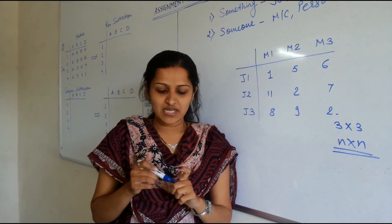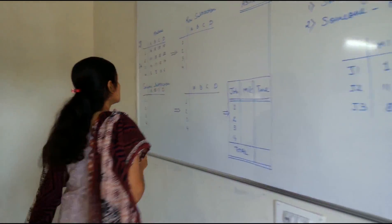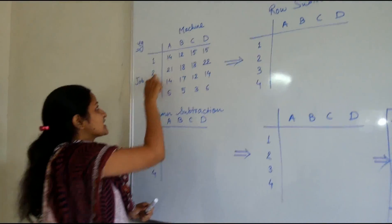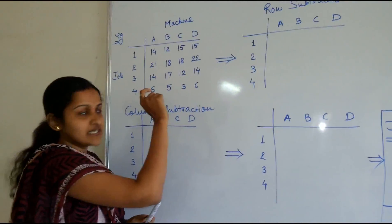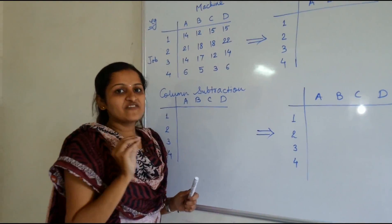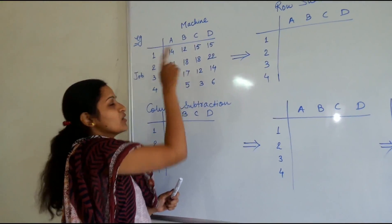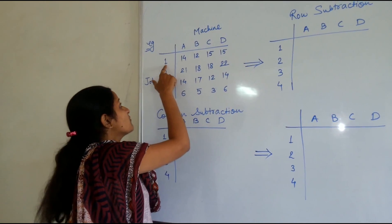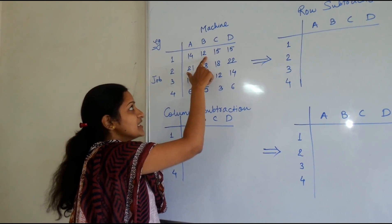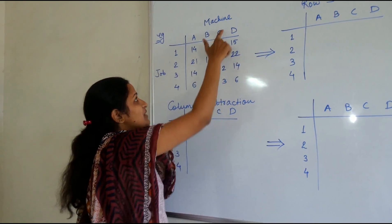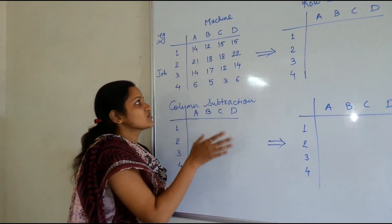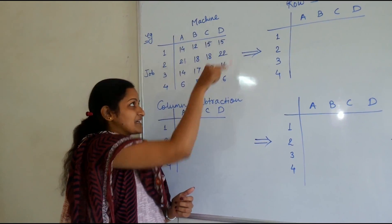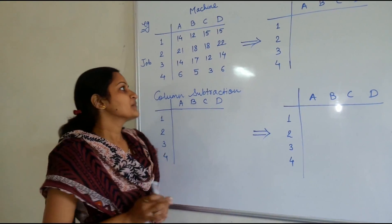Now let us see one simple example of how to solve assignment problems. In this example 4 jobs are given and 4 machines are given: A, B, C, D. These figures are time figures expressed in minutes. This means job 1 can be performed by machine A in 14 minutes, job 1 by machine B in 12 minutes, job 3 by machine C in 12 minutes, and so on. So this is a minimization type of problem because this matrix contains all time figures.